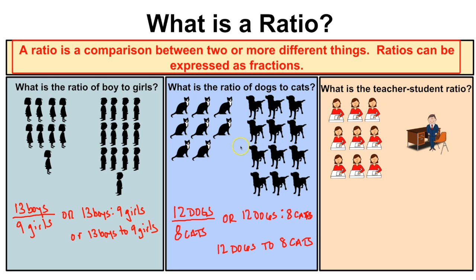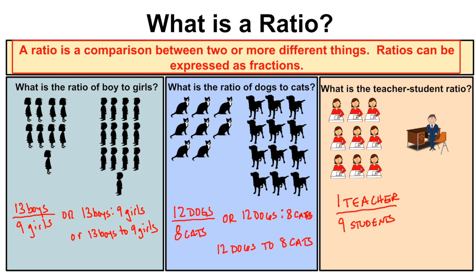A ratio is a comparison between two things. In this example we are comparing dogs to cats. If we take a look at this one — what is the teacher-student ratio? In this picture we see there is 1 teacher and 9 students. So our ratio of teacher to students is 1 to 9 — one teacher for every 9 students. We can apply this concept of ratios to chemical equations and mole ratios.